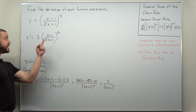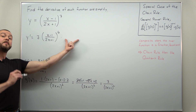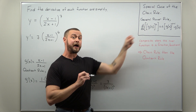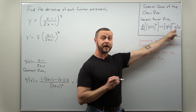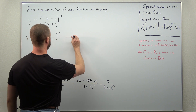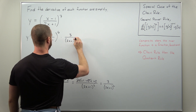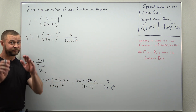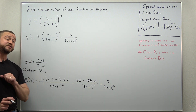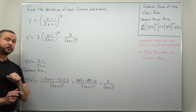That is g prime — the derivative of our inner function. We now multiply that back in, as required by the general power rule version of the chain rule. So we multiply by g prime, which is 3 divided by 2x plus 1 squared. We can simplify: 7 times 3 gives us 21.